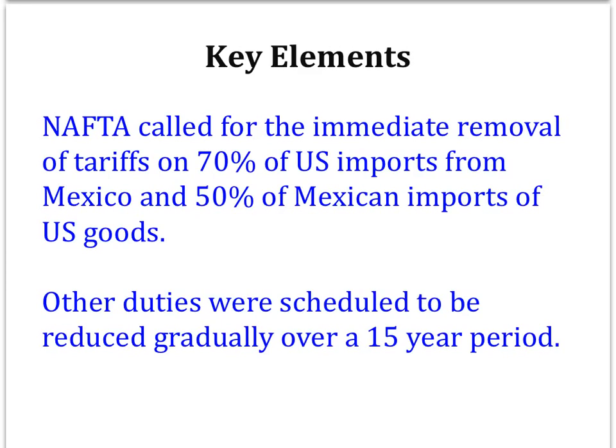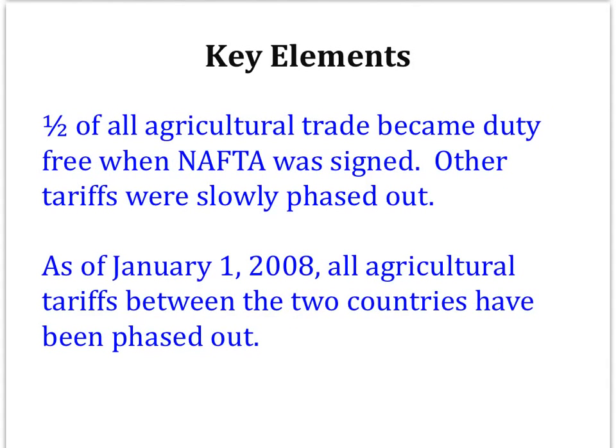NAFTA has also tried to harmonize quality standards, dictating that when one country applies a grading or classification standard to its own goods, it will provide at least as favorable of a classification for imported goods. Reducing trade barriers on agriculture has proved to be one of the most sensitive issues, but as of January 1, 2008, all agricultural tariffs between the two countries have been phased out. One half of all agricultural trade, in terms of value, became duty-free when NAFTA was signed, with other tariffs slowly phased out.